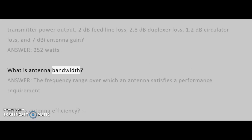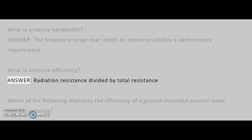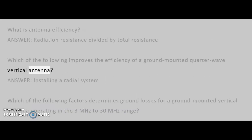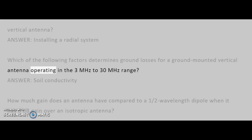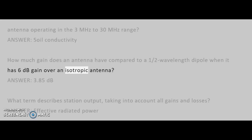What is antenna bandwidth? Answer: the frequency range over which an antenna satisfies a performance requirement. What is antenna efficiency? Answer: radiation resistance divided by total resistance. Which of the following improves the efficiency of a ground-mounted quarter-wave vertical antenna? Answer: installing a radial system. Which of the following factors determines ground losses for a ground-mounted vertical antenna operating in the 3 MHz to 30 MHz range? Answer: soil conductivity. How much gain does an antenna have compared to a half-wavelength dipole when it has 6 dB gain over an isotropic antenna? Answer: 3.85 dB.